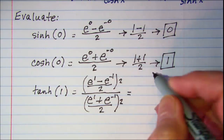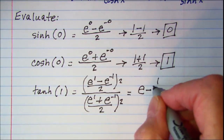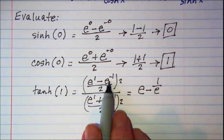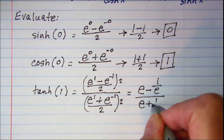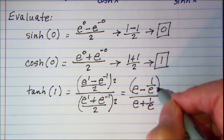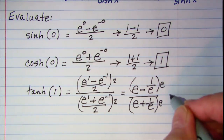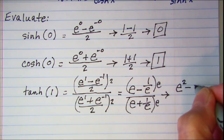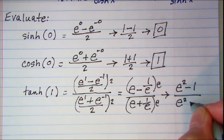This gives us e minus 1 over e, divided by e plus 1 over e. We then simplify this complex fraction by multiplying top and bottom by e, giving us e squared minus 1 over e squared plus 1.